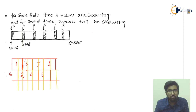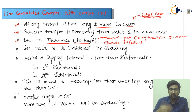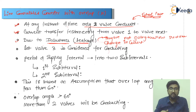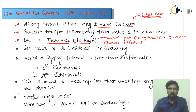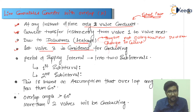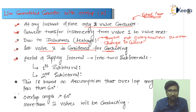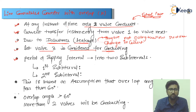The period of time during which valve one and valve three are both conducting simultaneously is called the overlap angle. During this interval, we can divide the supply interval into two sub-intervals: in the first sub-interval, three valves are conducting, and in the second sub-interval, two valves are conducting.